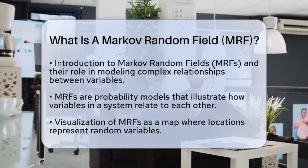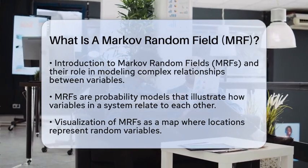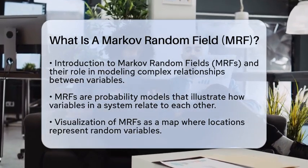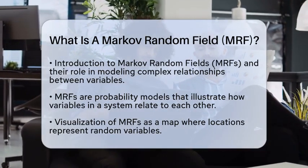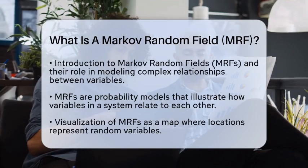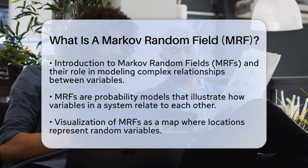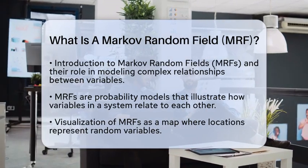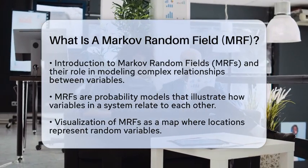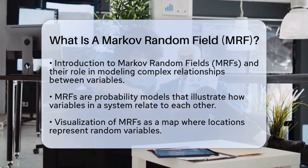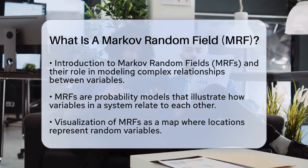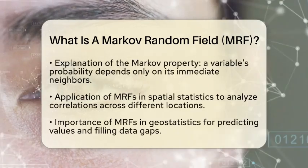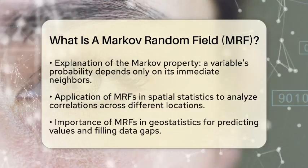A Markov random field is a type of probability model that helps us understand how different variables in a system relate to one another. Imagine a map where each location represents a random variable. In this map, the connections between locations show which variables influence each other directly. This is where the Markov property comes into play: the probability of a variable depends only on its immediate neighbors, not on all other variables in the system.